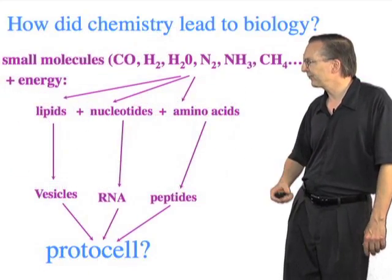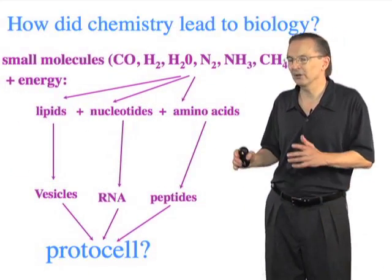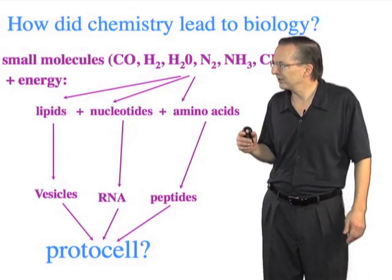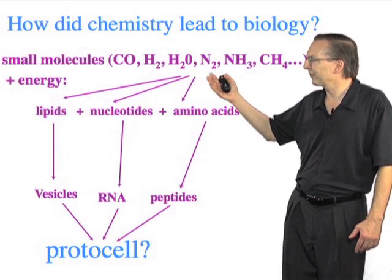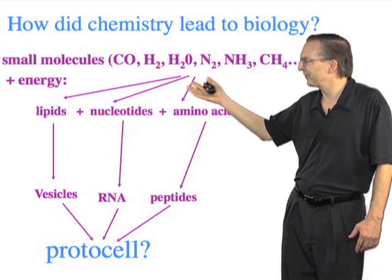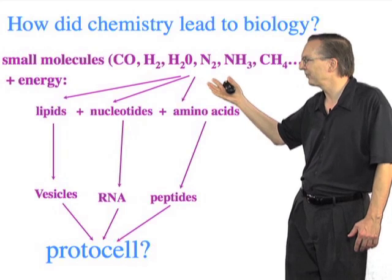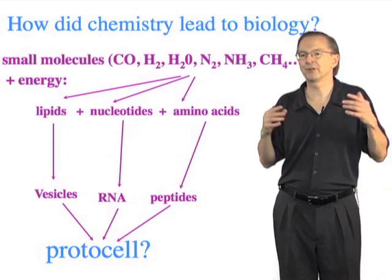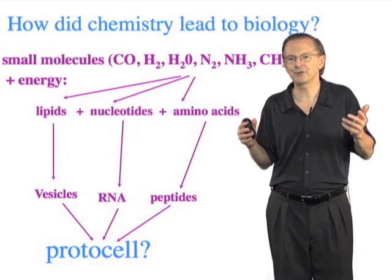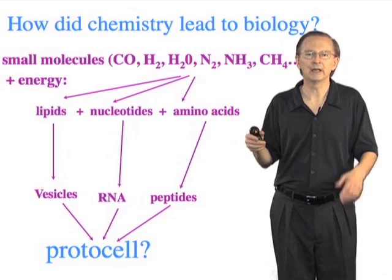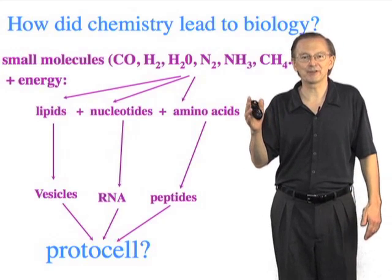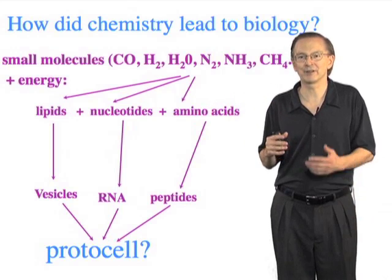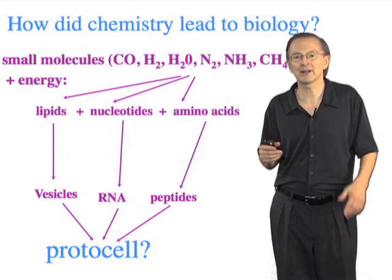Let's look a little bit more closely at the chemical steps. In broad outline, what we think happened is that you start off with very simple molecules, such as shown up here. There's still a lot of debate about the nature of the early atmosphere. Scientific opinions have gone back and forth in terms of the structure and how reducing that atmosphere was.